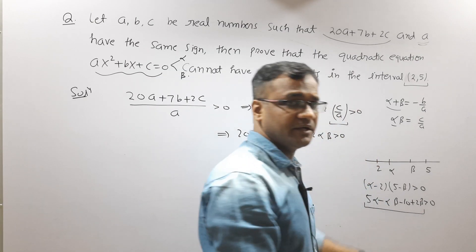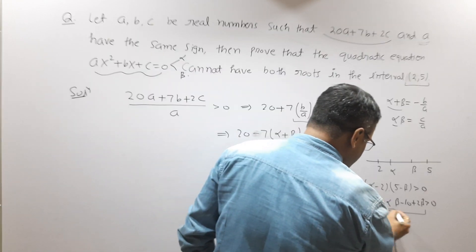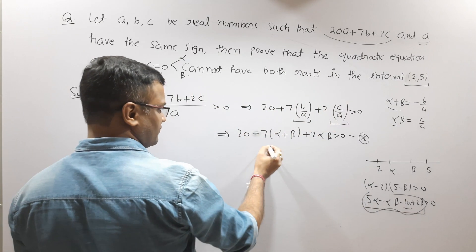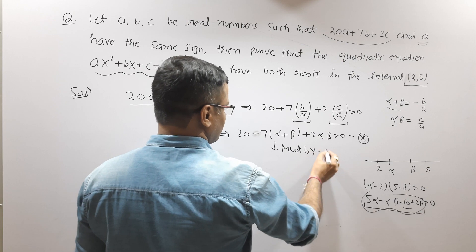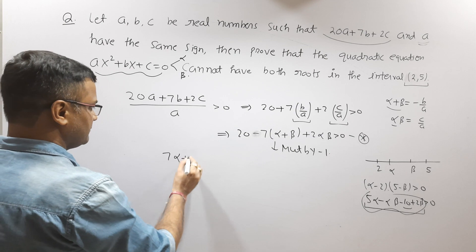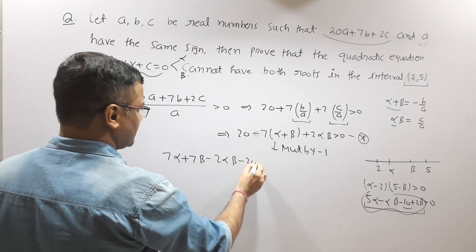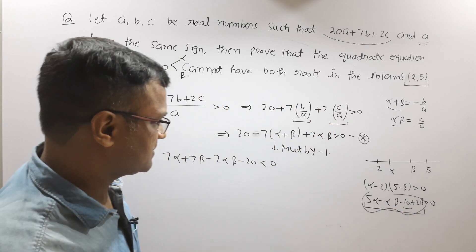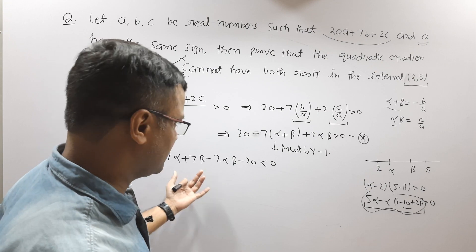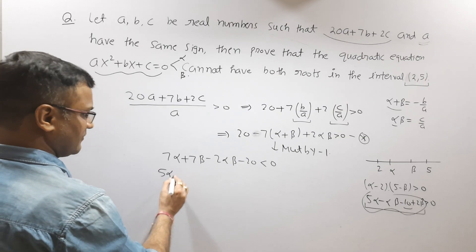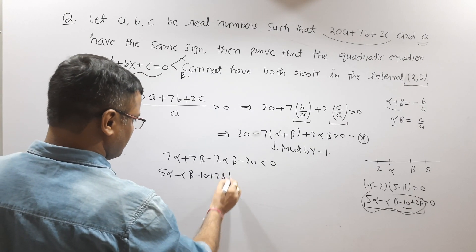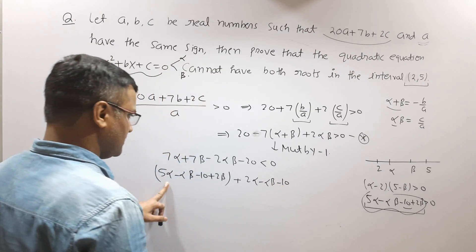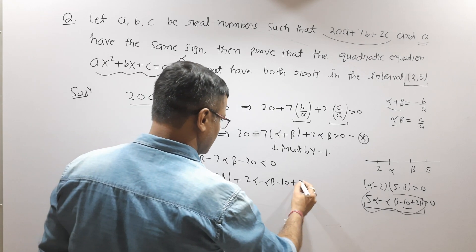We now introduce this into the inequality. Expanding (α − 2)(5 − β) > 0 gives: 5α − αβ − 10 + 2β > 0. Multiplying by −1 reverses the inequality: −5α + αβ + 10 − 2β < 0, which we rearrange as 7α + 7β − 2αβ − 20 < 0. We then split the left-hand side so that the factor (α − 2)(5 − β) appears.